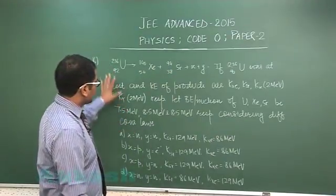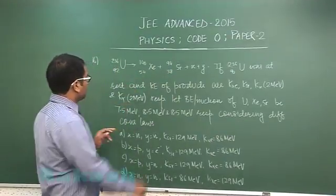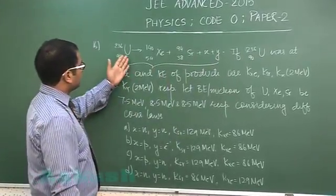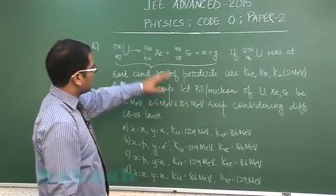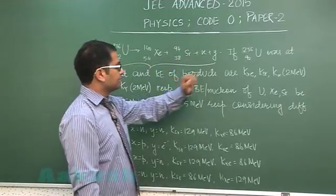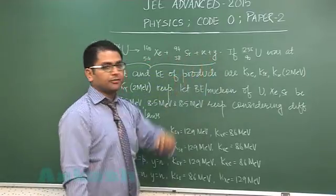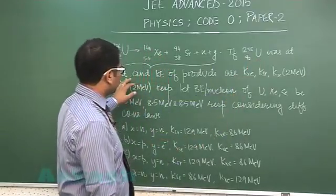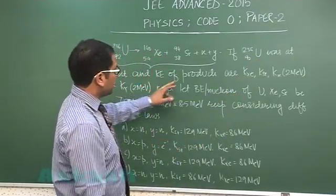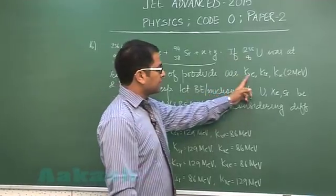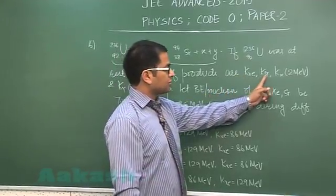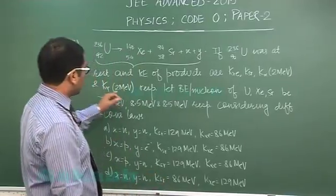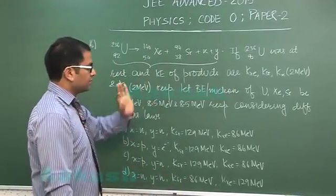Question 16 is a uranium nucleus disintegrating into xenon and strontium, with additional products X and Y. Initially, the uranium was at rest, and the kinetic energies of the products are K-xenon, K-strontium, K-X given as 2 MeV, and K-Y as 2 MeV respectively.